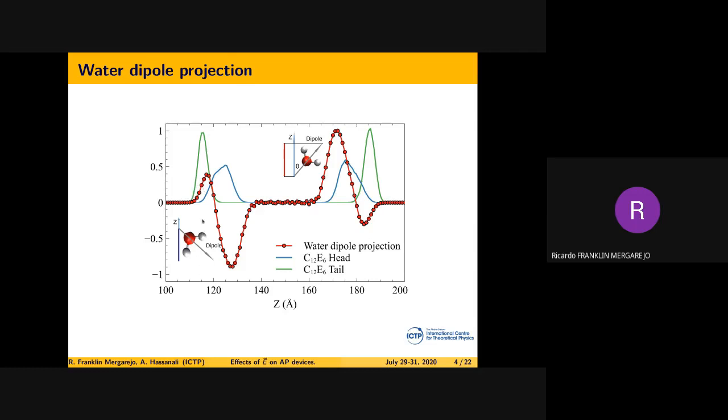We have a flipping of the dipole projection of water. We expected the net dipole projection because of symmetry breaking on the surface, but not the flipping—this is not something we expected to see in this kind of system.